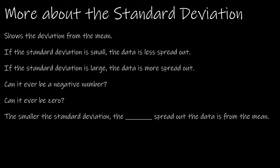If the standard deviation is small, the data is not as spread out; if it's large, the data is more spread out. Can the standard deviation ever be negative? Let's think about it: we took the variance — found by squaring deviations and adding them — then divided by a positive number and took the square root. Squaring always gives a positive result, so no, it cannot be negative.